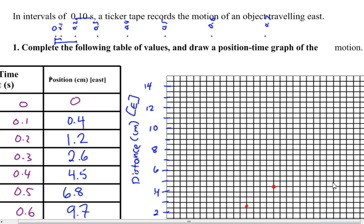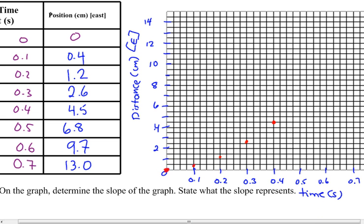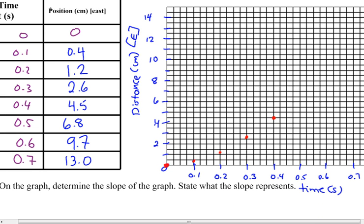This is on page 34 of your workbook. We have our ticker tape again, this is our review. We've measured our distance always from zero. This is time zero, and each one is one-tenth of a second apart. We measured from zero what that distance is and plotted it in a chart. We're plotting our data now. We have distance versus time. We're at 0.5 seconds, and it's 6.8.